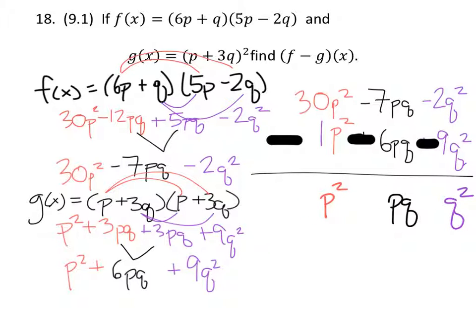We can just bring down the unknowns, the p's and q's, the p squareds, q squareds, and pq's. And then we're just going to subtract all the coefficients of each of these individually.